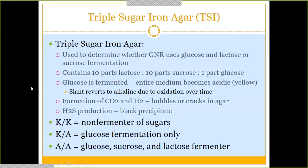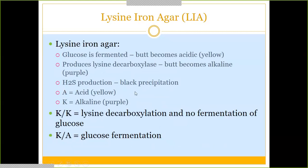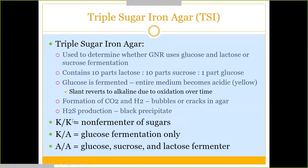For TSI agar: it contains 10 parts lactose, 10 parts sucrose, and 1 part glucose. If only glucose is fermented, the entire tube becomes yellow. H2S production creates black precipitate throughout. Gas production (CO2) may cause bubbles or cracks. If the tube stays the original purplish-red color (K/A with only the bottom yellow), only glucose was fermented. If the entire tube turns yellow (A/A), all three sugars were fermented.